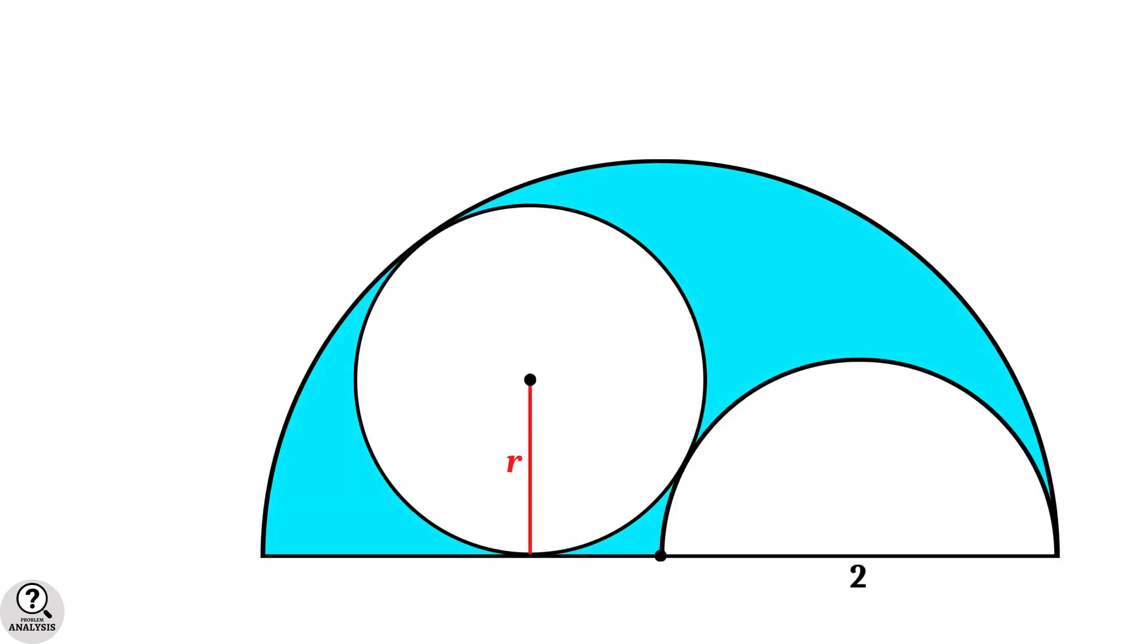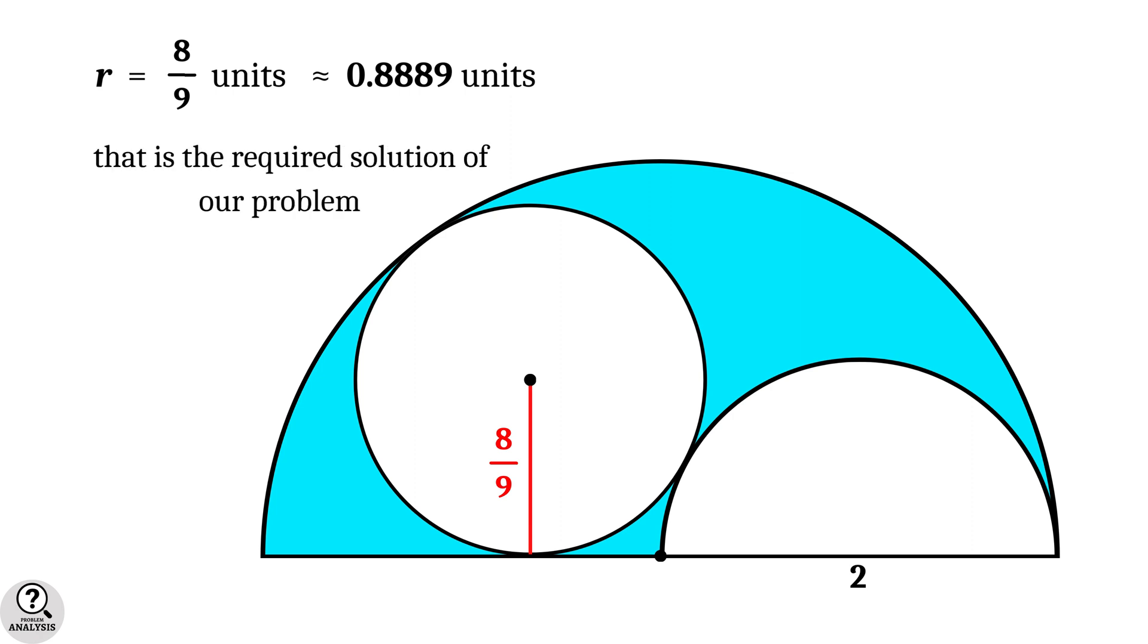And that will give 9R equal to 8 which implies R equal to 8 by 9 units. So, in the diagram of our problem, radius of the circle is 8 by 9 units which is approximately equal to 0.8889 units. And that is the solution we are looking for.